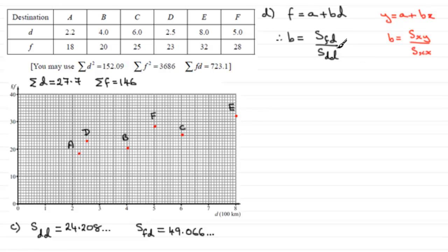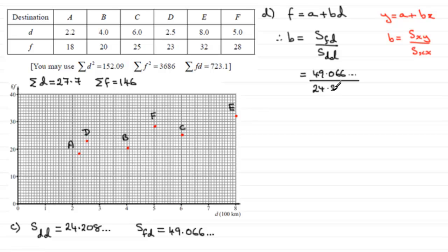We've got these values here — we worked them out in part C, which I've recorded here. So all we need to do is put them in. For SFD we have 49.066, and that's divided by SDD, 24.208. If you work that out, it equals 2.0268. So that's B.